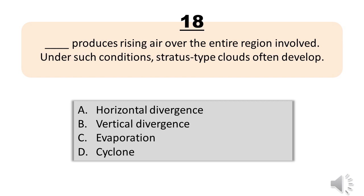Number 18. Blank produces rising air over the entire region involved. Under such conditions, stratus type clouds often develop. A. Horizontal divergence. B. Vertical divergence. C. Evaporation. D. Cyclone. The correct answer is Letter A. Horizontal divergence.